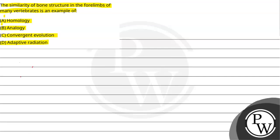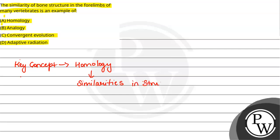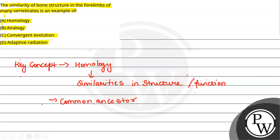The question is asking about what the similarity in bone structures in the four limbs of vertebrates is an example of. The key concept here is homology. So homology क्या होती है? It is the similarity in structures or functions between different species. यह हो सकता है कि इनके पास कोई common ancestor हो. For example, the four limbs of humans, whales, and bats.